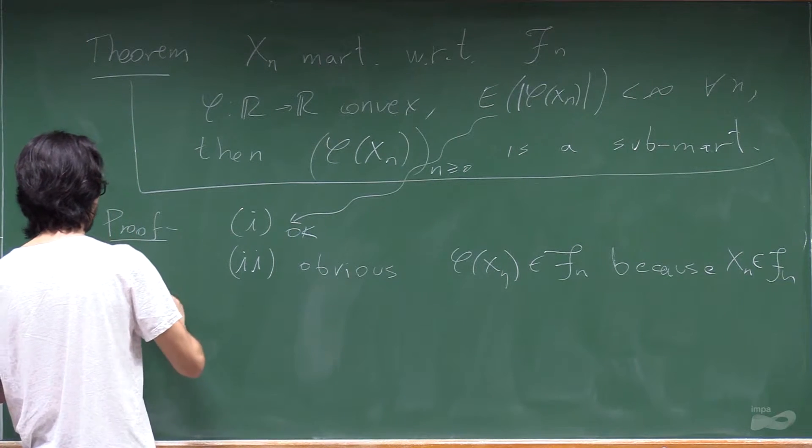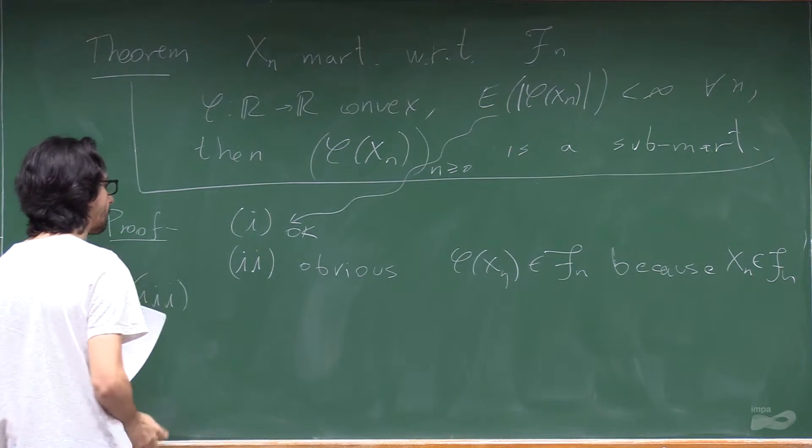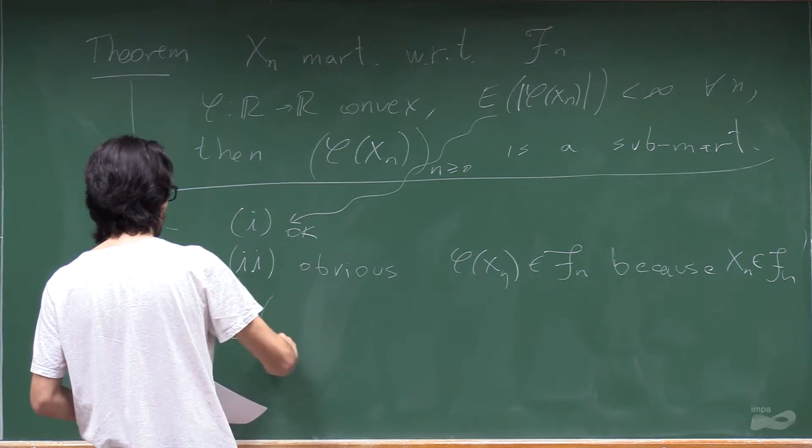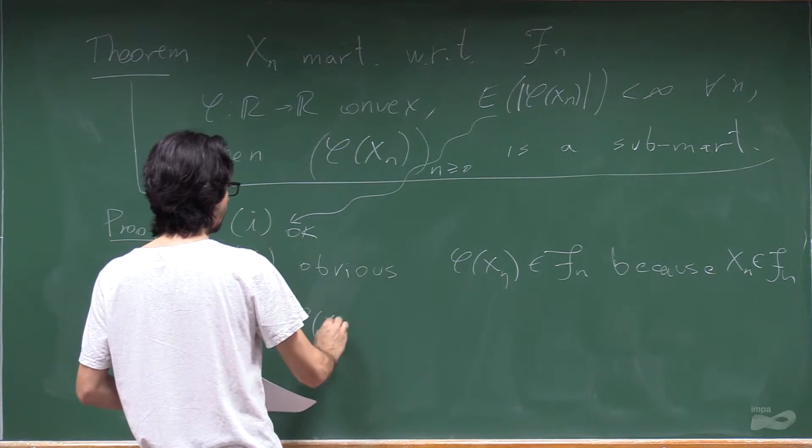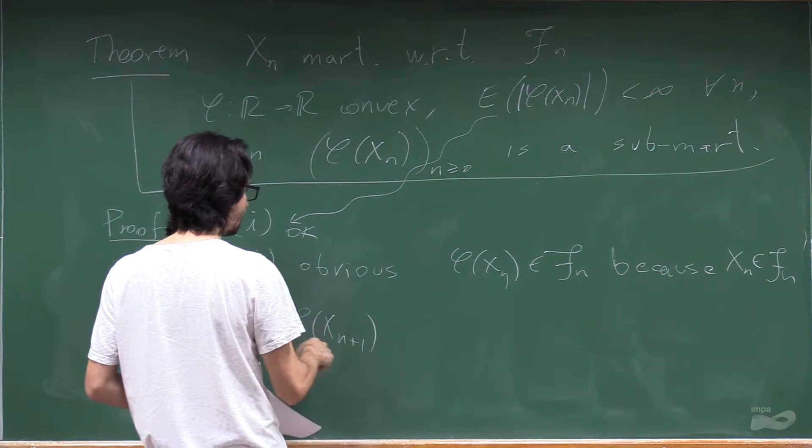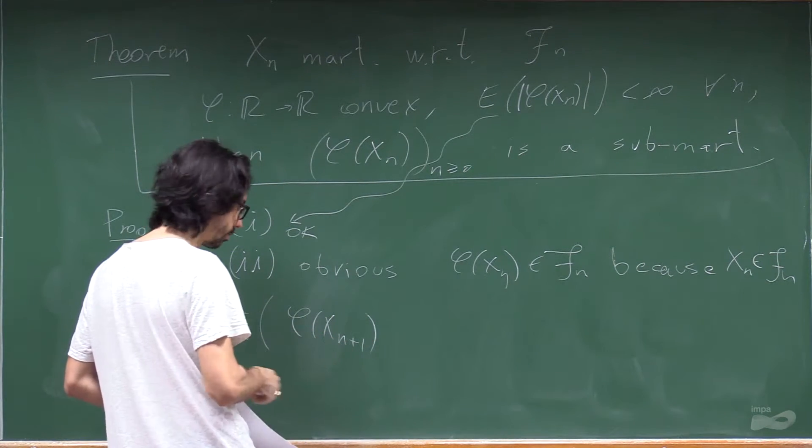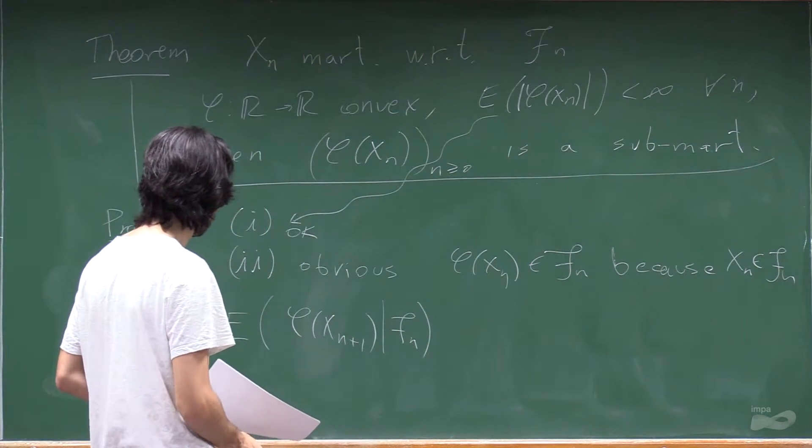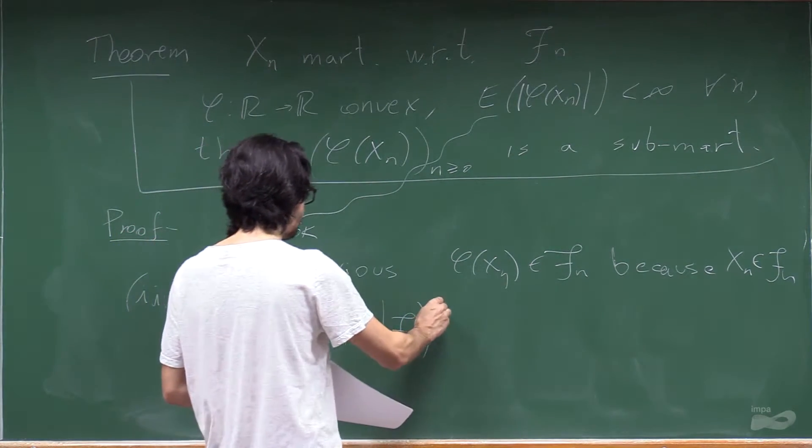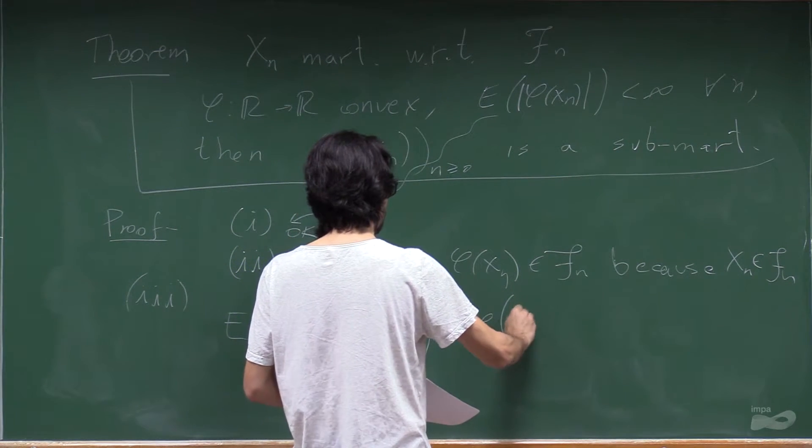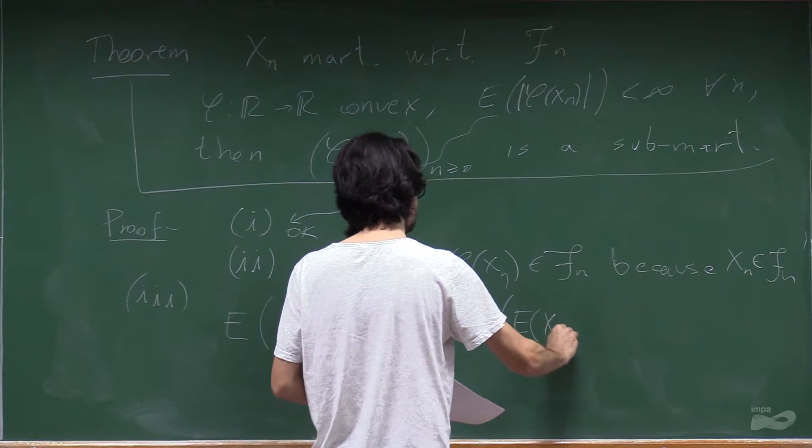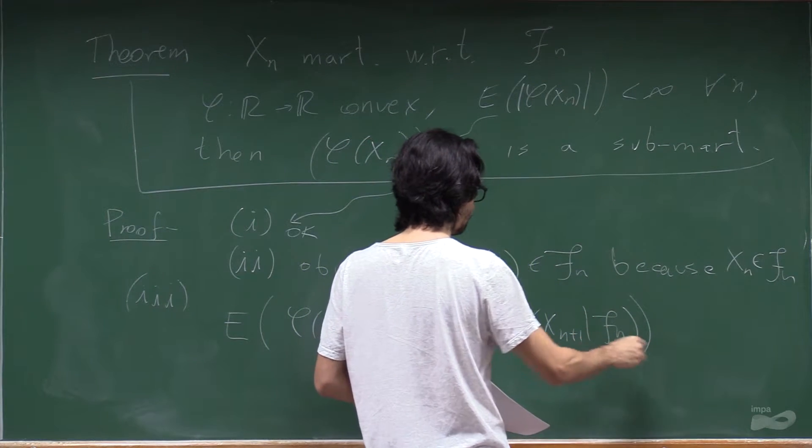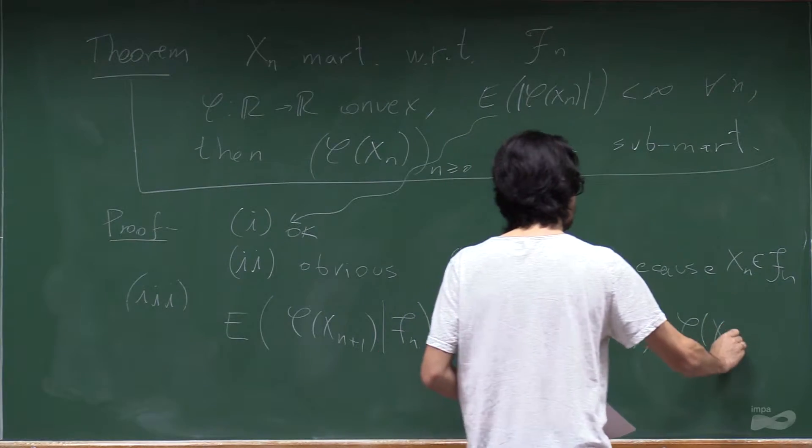Now to 3, what's the expectation of this thing that wants to be a martingale in time n plus 1 given fn? OK, by Jensen's inequality, this is bigger or equal than phi of the conditional expectation. And this is exactly phi of xn.